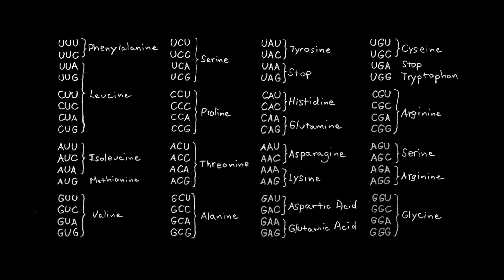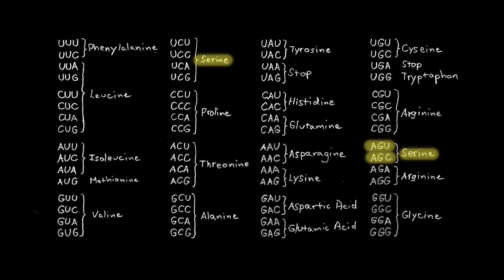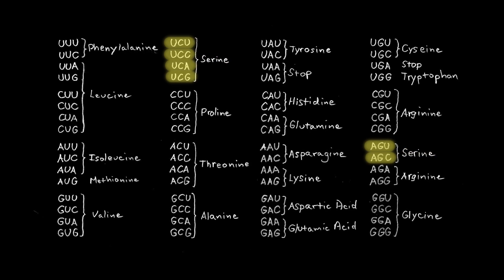We're able to do this because each amino acid can be encoded by more than one codon. Serine, it turns out, can be encoded by six different codons.